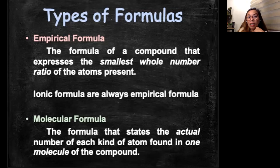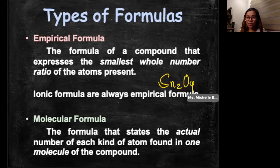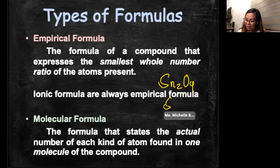While molecular formula, the formula that states the actual number of each kind of atom found in one molecule of the compound. For example, N2O4. However, this is not an empirical formula because it is not in a smallest whole number ratio where you can still simplify N2O4. So you have NO2.